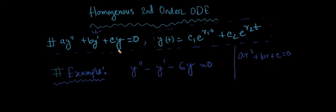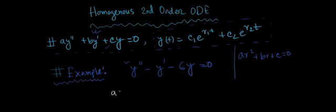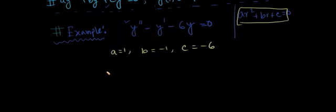If you just look at this equation and compare, you can easily see that a is 1, b is minus 1, c is minus 6. So the auxiliary equation will have the format a·r² + b·r + c = 0 and we need to solve that to get two values of r. In this example, r1 and r2 are not equal, so let's try to solve this auxiliary equation first.